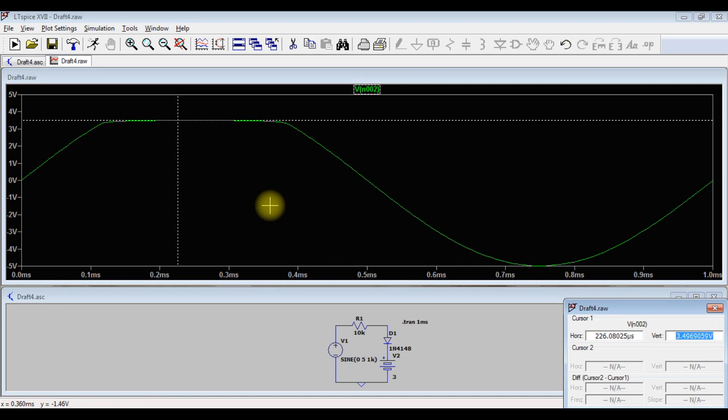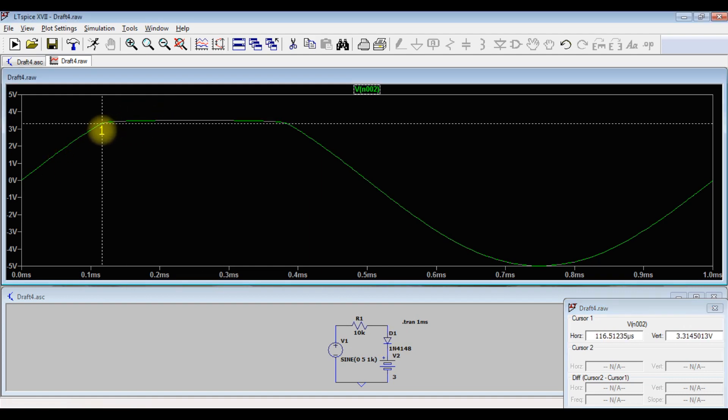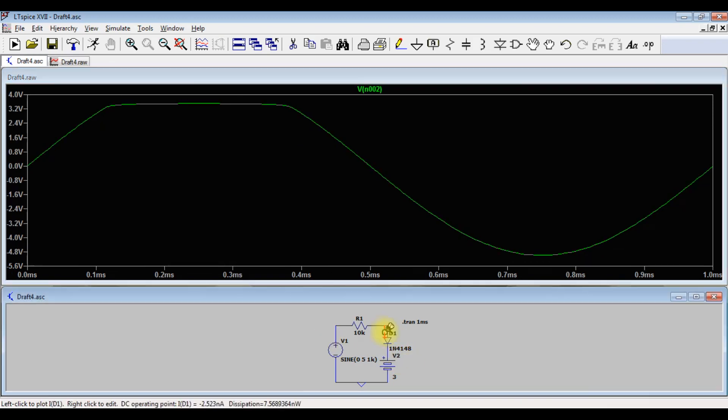Okay, regarding the current. As we see here, the diode is conducting in this region between 0.1 millisecond and 0.4 millisecond, so the current should be flowing between these two times.